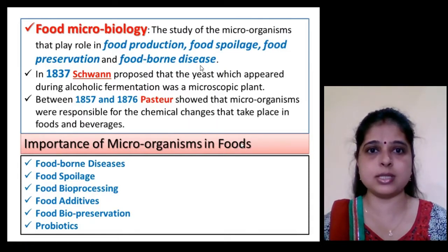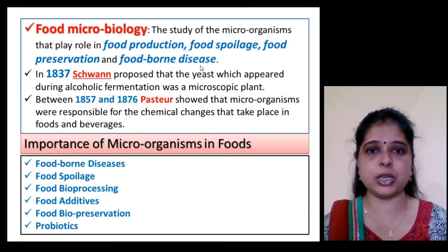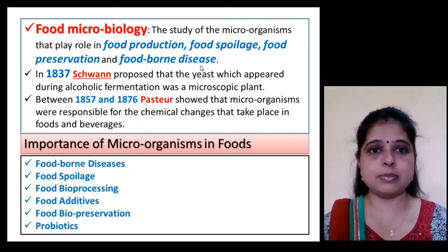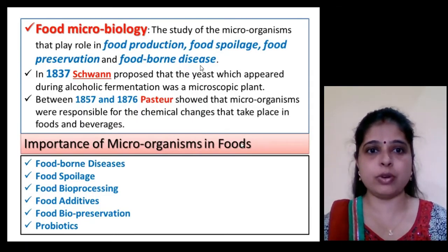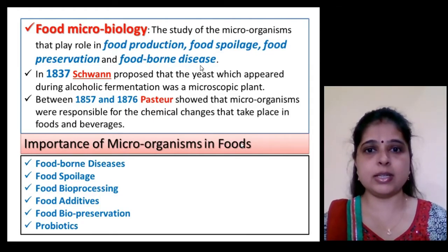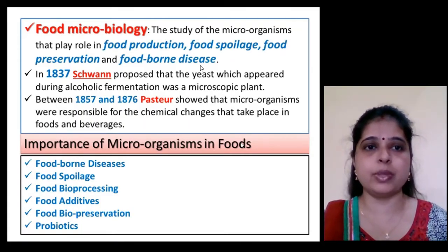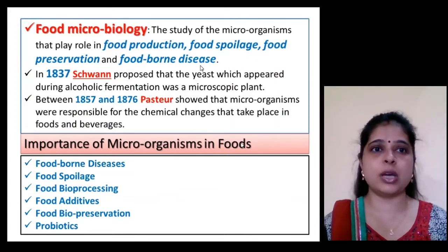In 1837, Schwann proposed that the yeast which appeared during alcoholic fermentation was a microscopic plant — a microorganism which causes alcoholic fermentation. Between 1857 and 1876, Pasteur showed that microorganisms were responsible for the chemical changes that take place in food and beverages.